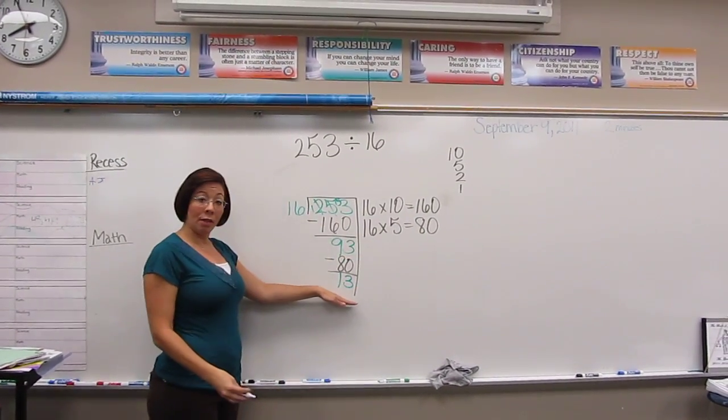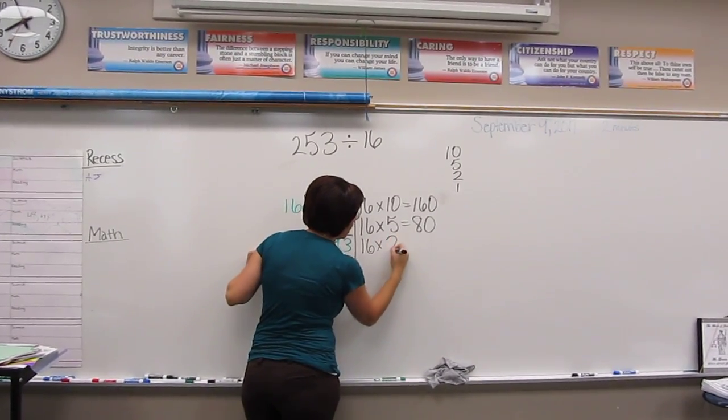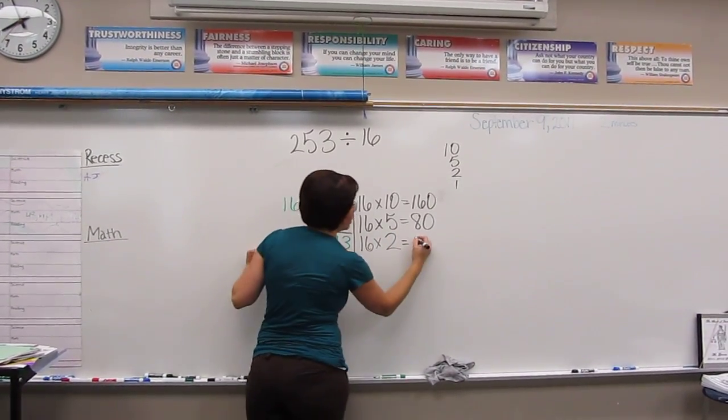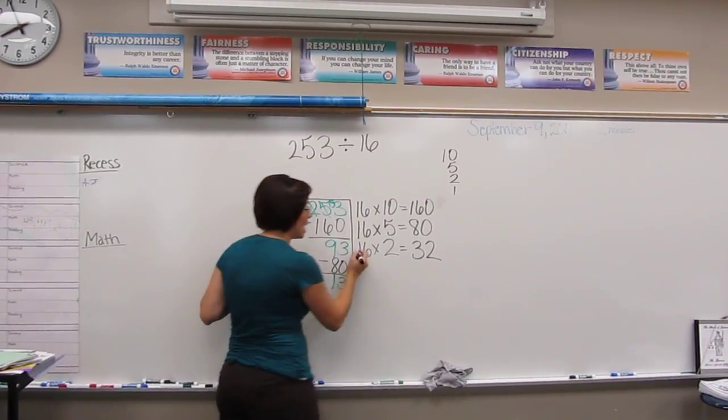I can see that I can't take another 80 away from 13. So what I do then is I go down to 2. 16 times 2 is 32. I notice that I can't take this out, so I cross it out. I didn't use that one.